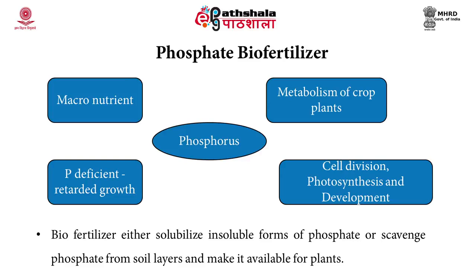Phosphate biofertilizers work in two ways: they either solubilize the insoluble form of phosphate, or they scavenge phosphate from the soil and make it available for the plant. The phosphate present in an inorganic, unavailable form is solubilized by phosphate biofertilizers and made available to the plant for good growth.